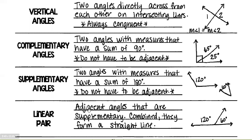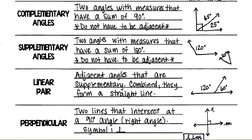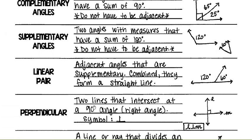Linear pair: adjacent angles that are supplementary and together form a straight line. Linear — given in the word — it has to be a straight line, which is 180 degrees. So 120 plus 60 equals 180 degrees. Perpendicular: two lines that intersect at a 90-degree right angle. The symbol looks like an upside-down T, meaning line L is perpendicular to line M. Perpendicular always means 90 degrees.